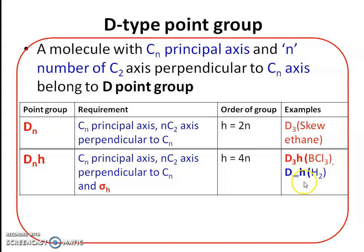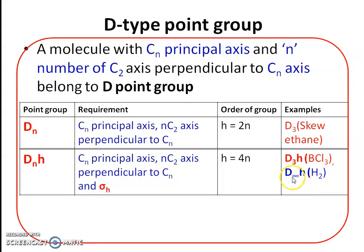The D∞H point group requires a C∞ principal axis, an infinite number of C2 secondary axes perpendicular to C∞, and a horizontal plane also perpendicular to C∞. The example of D∞H is the hydrogen molecule.